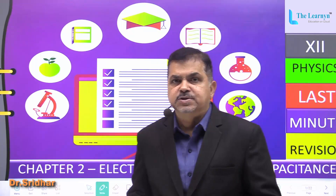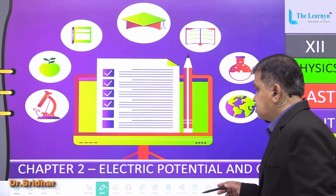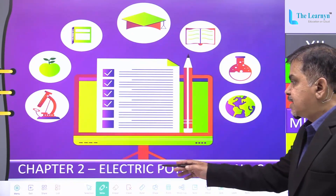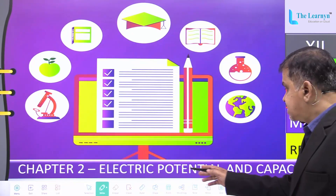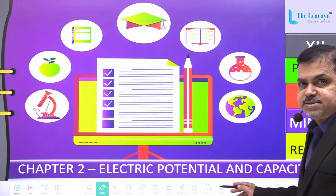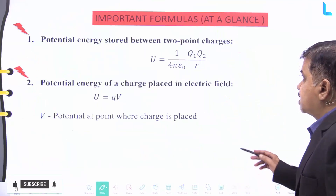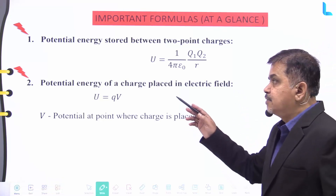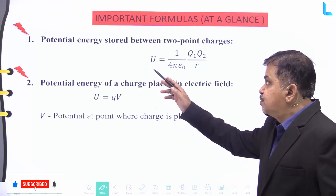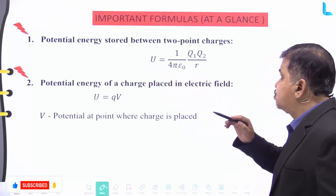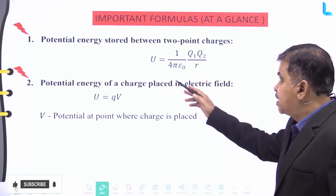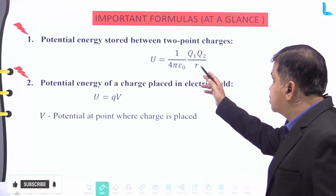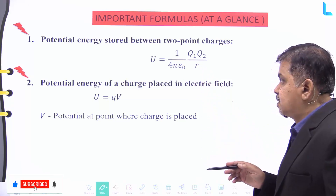Let us do a quick revision on the subject of physics for class 12 CBSE. We'll cover chapter number two, that is Electric Potential and Capacitance. We'll note down some important formulas at a glance. The first one: the potential energy stored between two point charges is given by U = (1/4πε₀) × (q1·q2)/r.